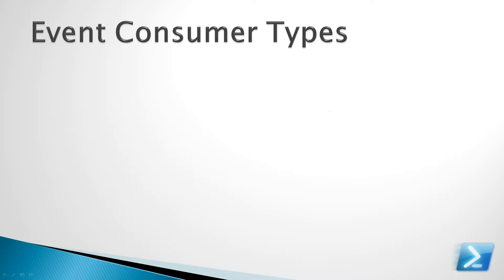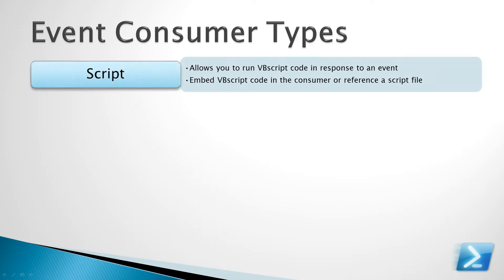So what are the different event consumer types? In the introduction video we mentioned that there are 5 different types of event consumers. First we have a script consumer. This allows you to run VBScript code in response to a WMI event. You have the option of either referencing a script file that you've created, or you can embed VBScript code inside the consumer class. We'll talk more about this later.